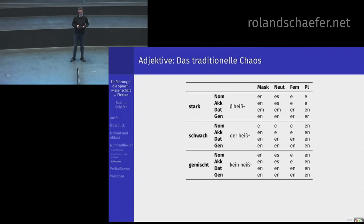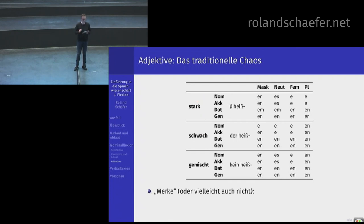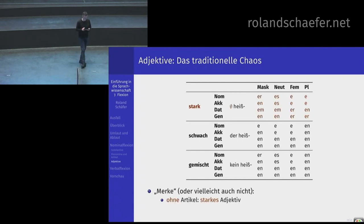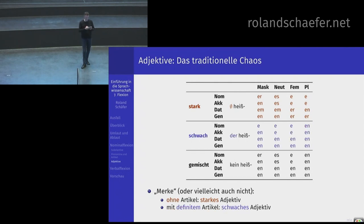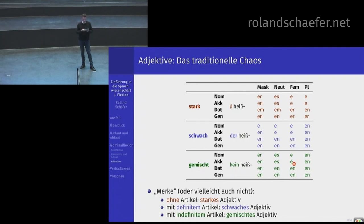Adjektive werden Ihnen in manchen Grammatiken so präsentiert: deutsche Adjektive haben 48 Formen, die muss man auswendig lernen. Und wenn ich schon so anfange, wissen Sie, das kann nicht die ganze Geschichte sein. Wenn kein Artikel davor steht, kommt die starke Flexion: heißer Kaffee schmeckt lecker, heißen Kaffee trinke ich nicht, mit heißem Kaffee. Wenn ein definiertes Artikelwort davor steht, kommt die schwache Flexion. Wenn ein indefinierter Artikel – also ein oder kein – davor steht, kommt die gemischte Flexion.